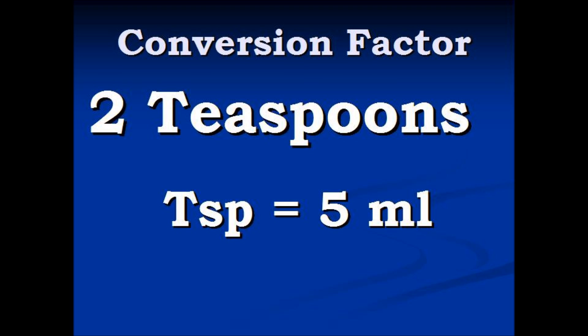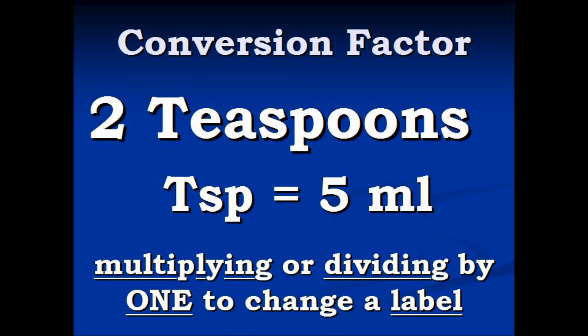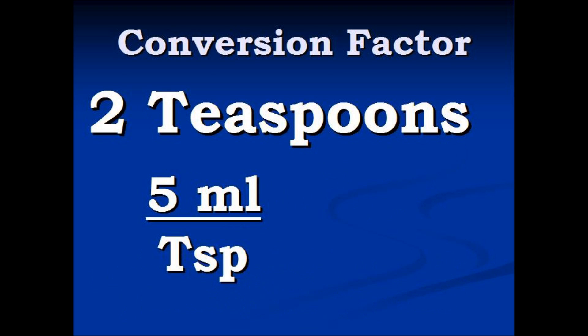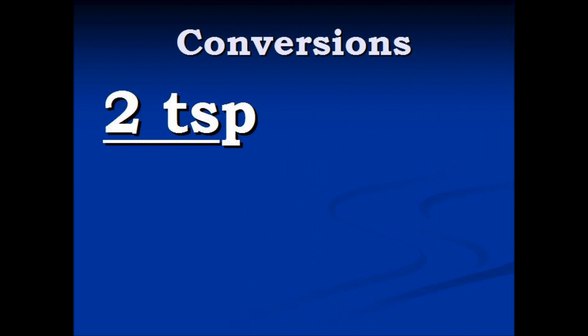To convert, remember we're going to multiply or divide by one label to change another one. So we have our conversion, which equals one. We've made it a ratio and we're going to multiply that into the two teaspoons.